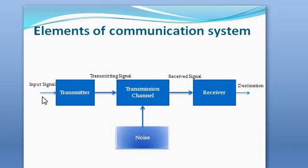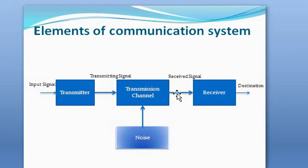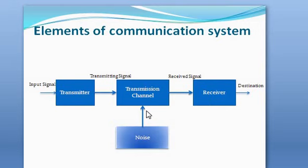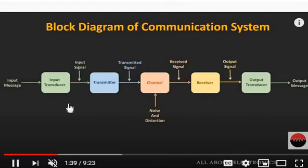These are the elements of a basic communication system. The input signal is given to the transmitter. After the transmitter block, we can see the transmitting signal, which is given to the transmission channel. Through the channel, it will reach the receiver, which is the destination. The channel may be affected by noise.